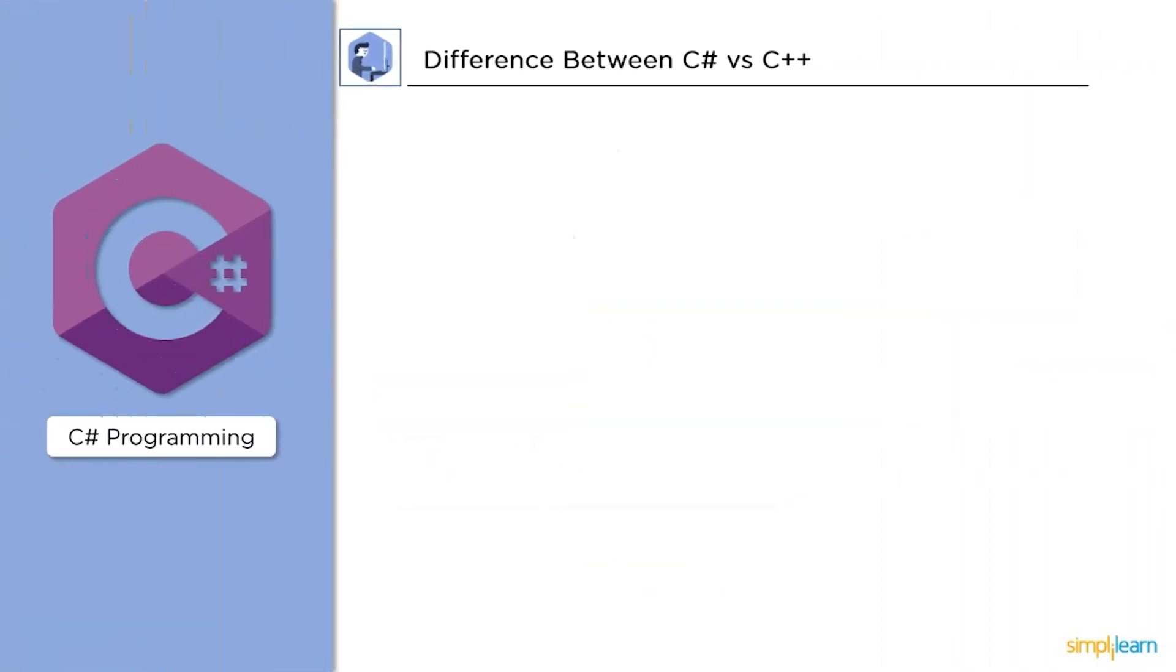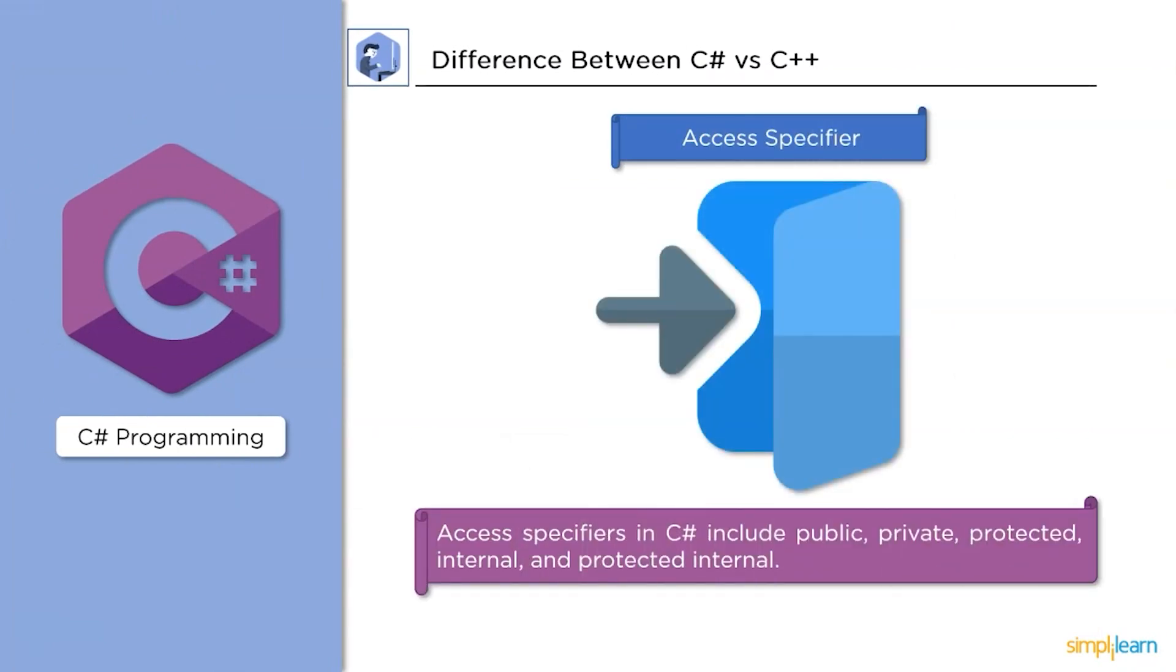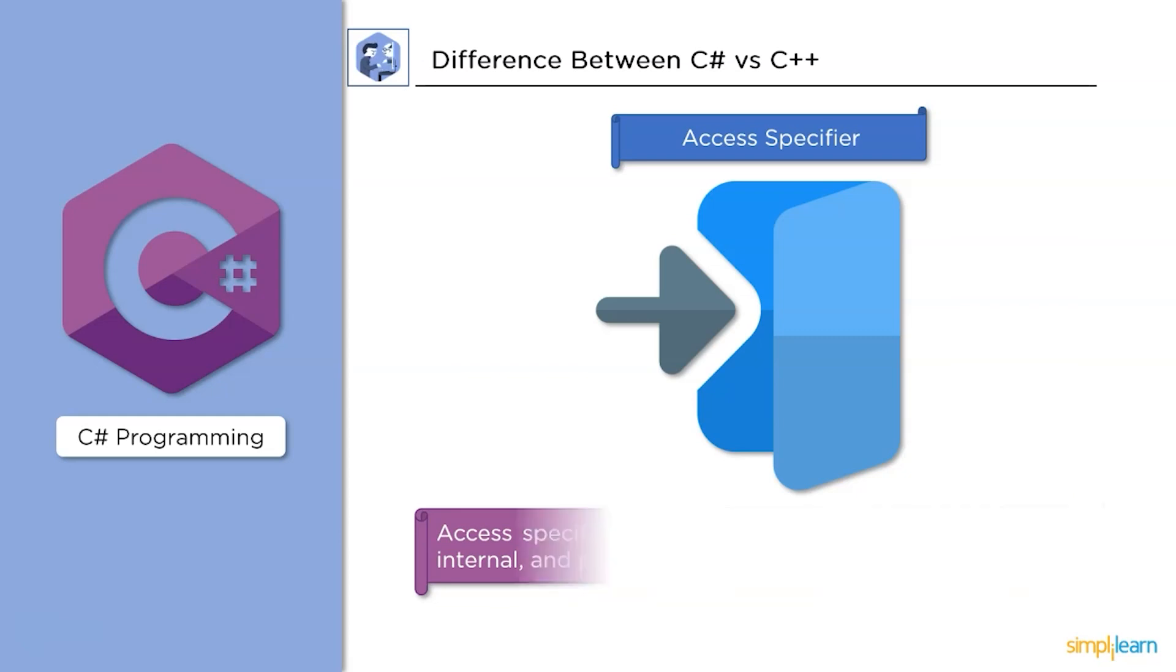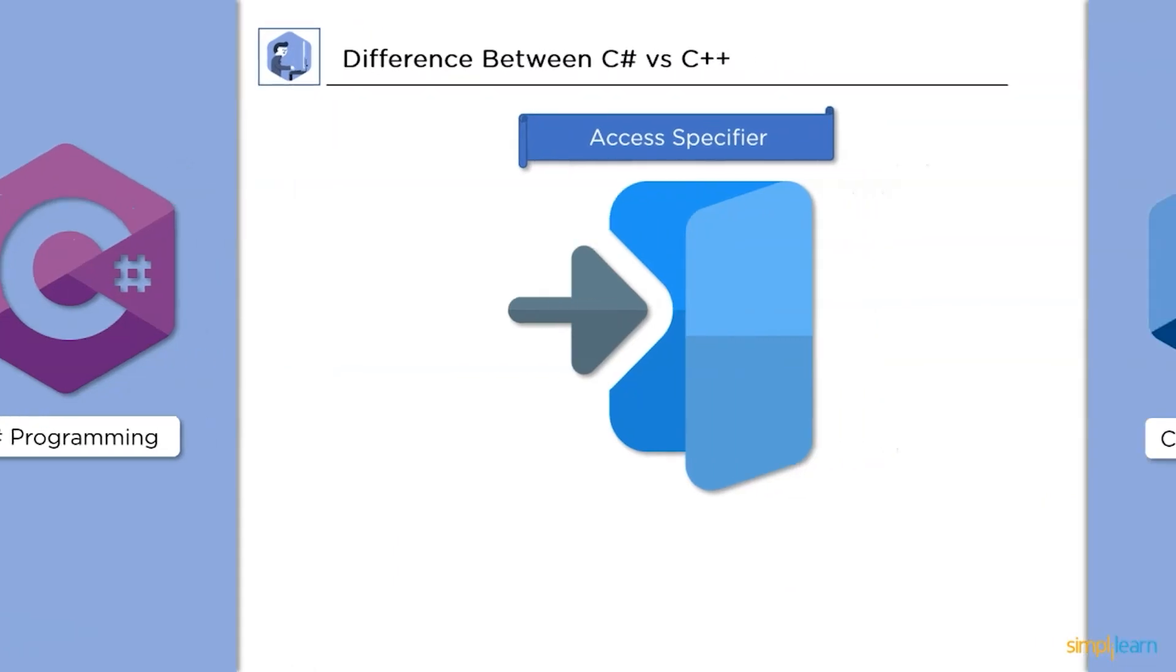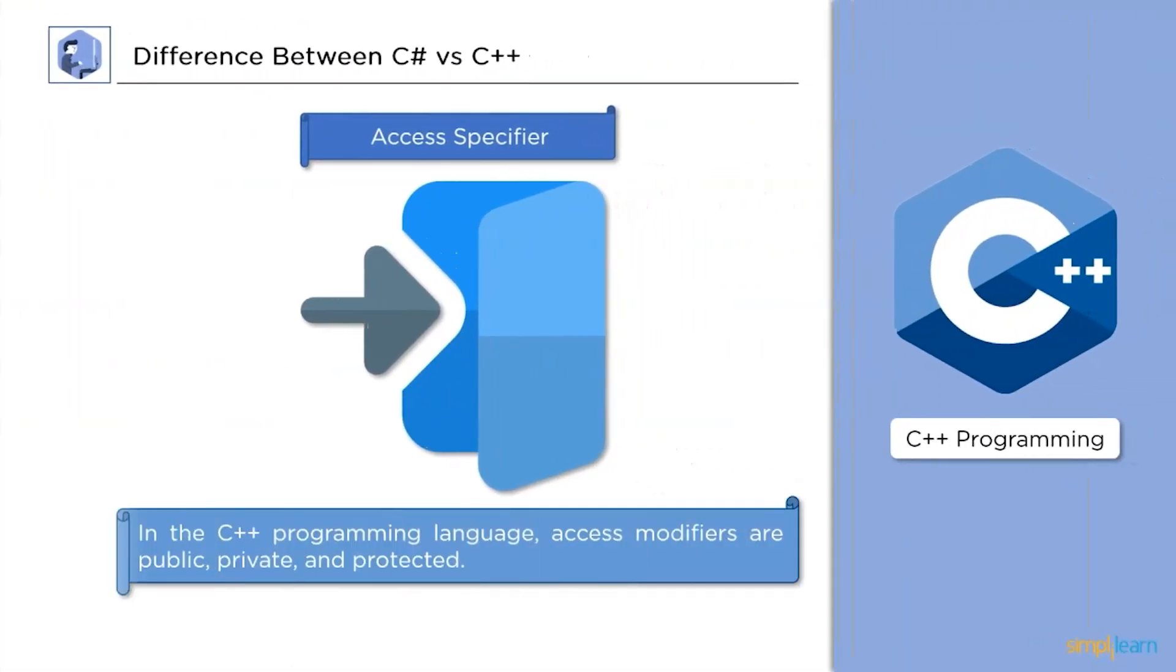Next up, access specifier. Access specifiers in C Sharp include public, private, protected, internal, and protected internal. On the contrary, C++ access modifiers include public, private, and protected. It lacks internal and protected internal access modifiers.